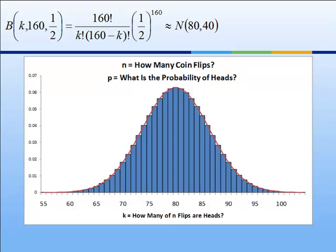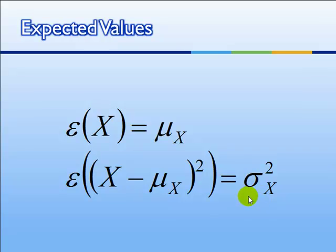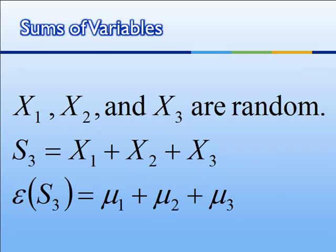The fact that the binomial distribution starts to look like the normal distribution once the number of things added together becomes large is a single instance of a more general phenomenon explained in the central limit theorem. To talk about the central limit theorem, we need to do a bit of review. The expected value of x is denoted with the Greek letter epsilon. The expected value of x is the mean of x. The expected value of x minus the mean of x, squared, is called the variance of x. Sigma squared is variance; sigma by itself is the standard deviation.